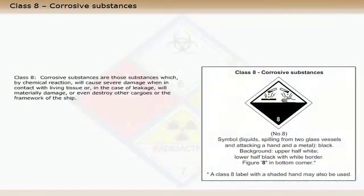Class 8: Corrosive substances are those substances which by chemical reaction will cause severe damage when in contact with living tissue, or in the case of leakage, will materially damage or even destroy other cargoes or the framework of the ship.